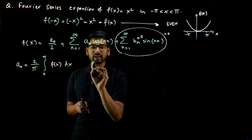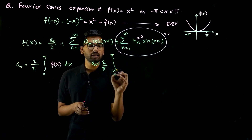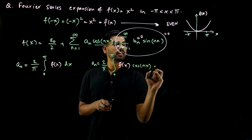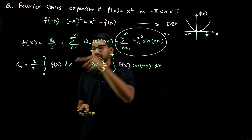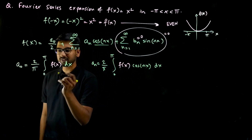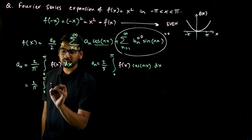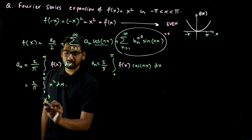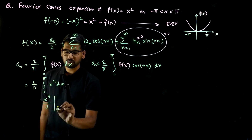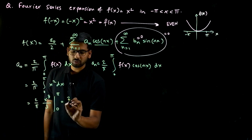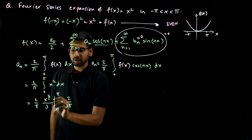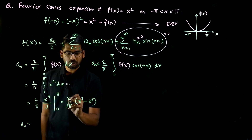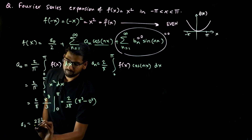So these are the two integrals we need to find. Let's substitute f of x equal to x squared. For a₀: this is 2 by pi, integration from 0 to pi of x squared dx. Integration of x squared is x cubed by 3, evaluated from 0 to pi. So this is 2 by pi times 1 over 3, giving pi cubed minus 0. One pi cancels, and you get a₀ equal to 2 pi squared by 3.